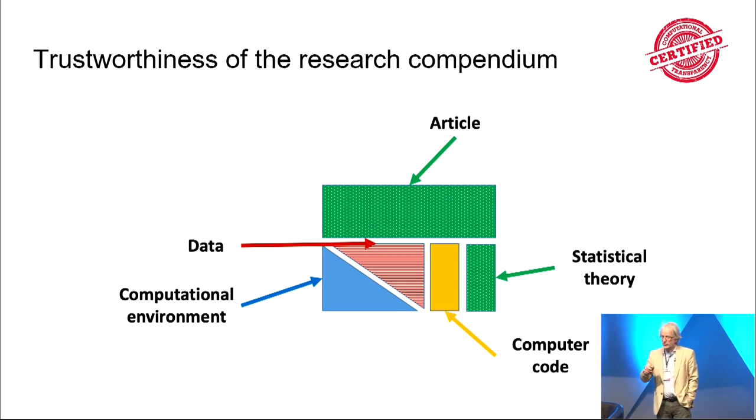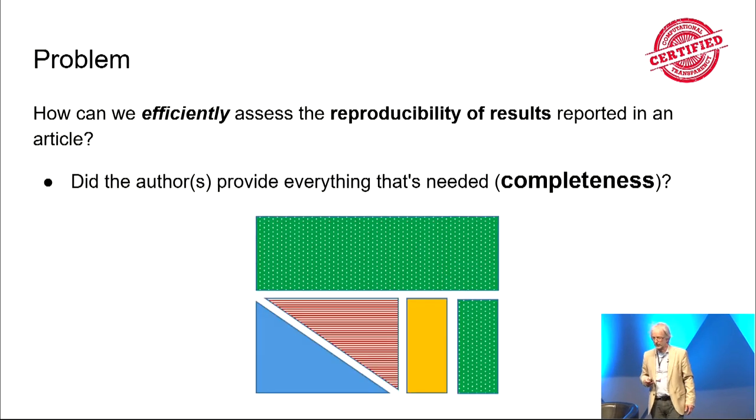So Lemor already mentioned the research compendium. I'm going to focus a piece here around that first step of how trustworthy, how reliable we actually think it might be. So research compendium is the article, the statistical theory, the computer code, the data, the computational environment. All these things play together to allow us to make all sorts of inferences. And every piece here has a role to play, some of which we try to assess during peer review, some of which are a question about the literature itself, other future users to think about.